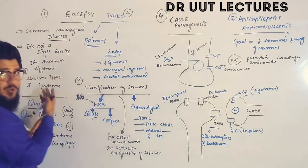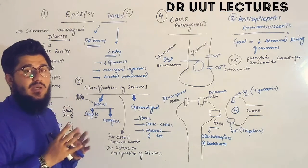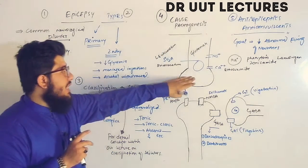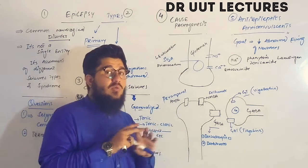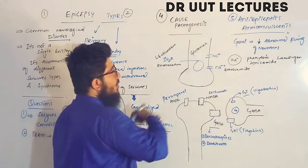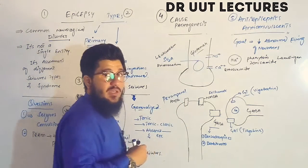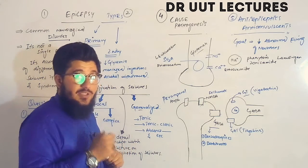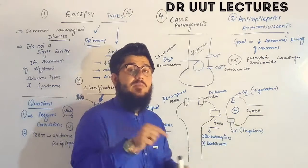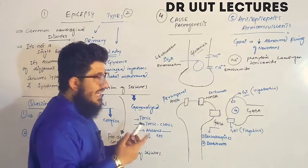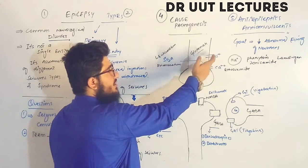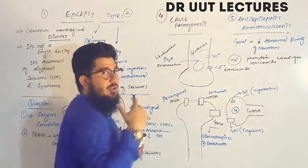How does this hyperactivity arise? Glutamate is the excitatory neurotransmitter of the central nervous system, while GABA is the inhibitory neurotransmitter. Normally, an action potential arrives, sodium ion channels open, sodium moves in, depolarization occurs, and this causes voltage-gated calcium channels to open.